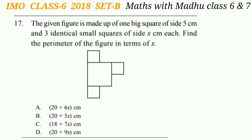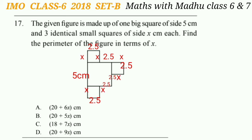Question 17: The given figure is made up of one big square with side 5 cm and three identical small squares with side x cm each. Find the perimeter of the figure in terms of x. Look at the figure carefully. The side of the big square is 5 cm and the side of each small square is x cm.